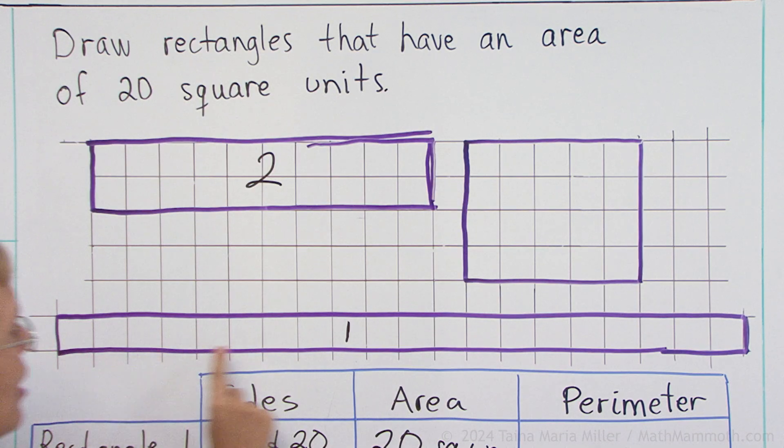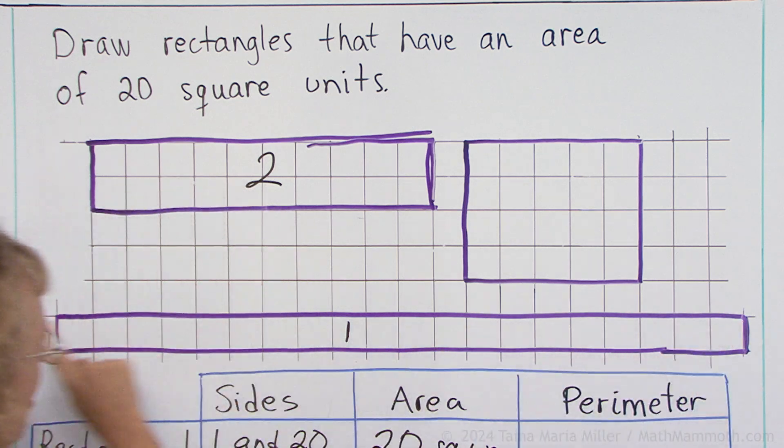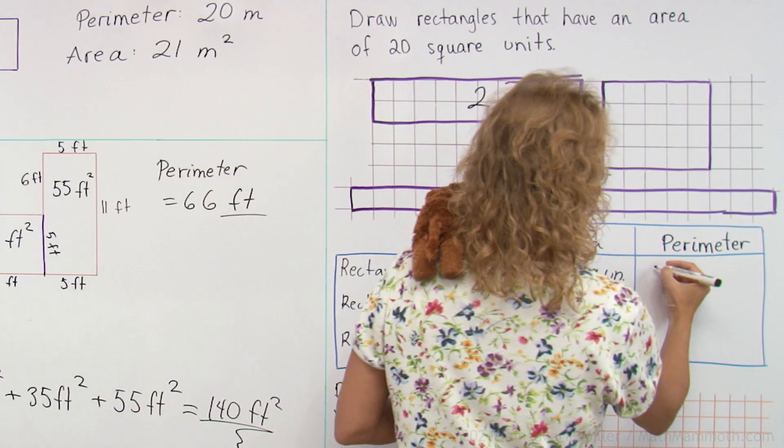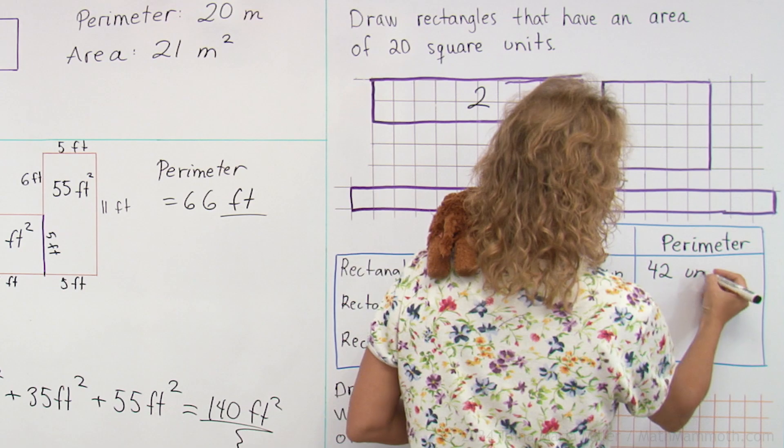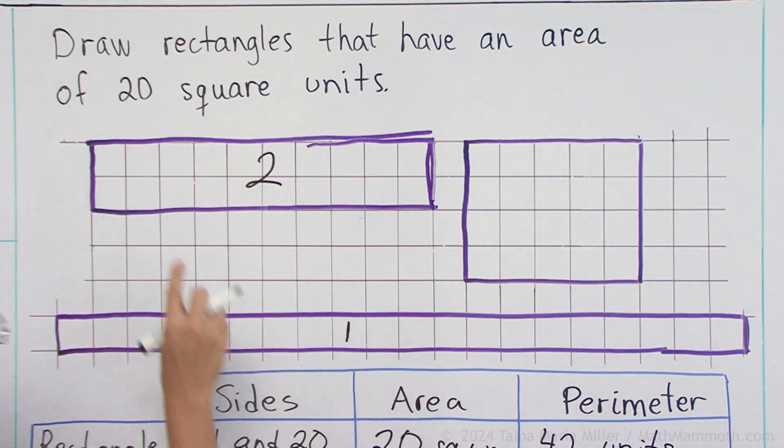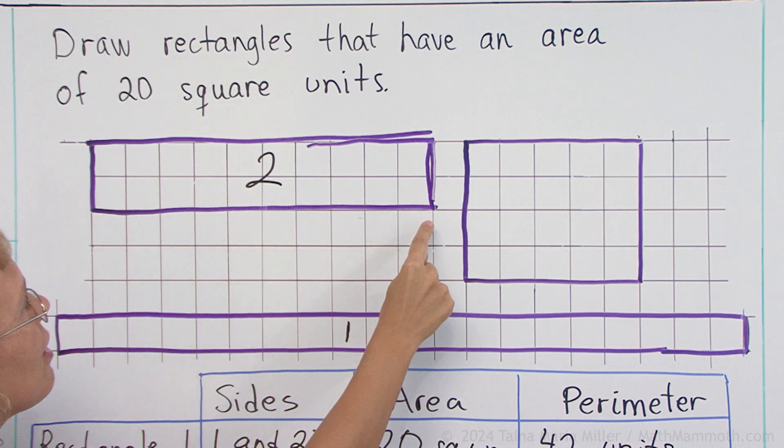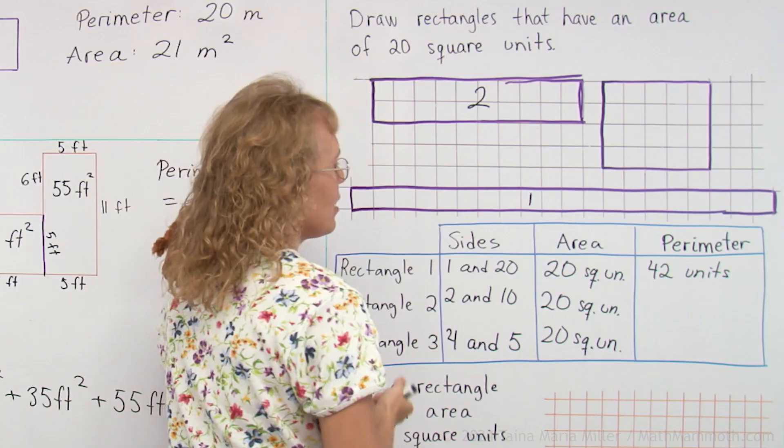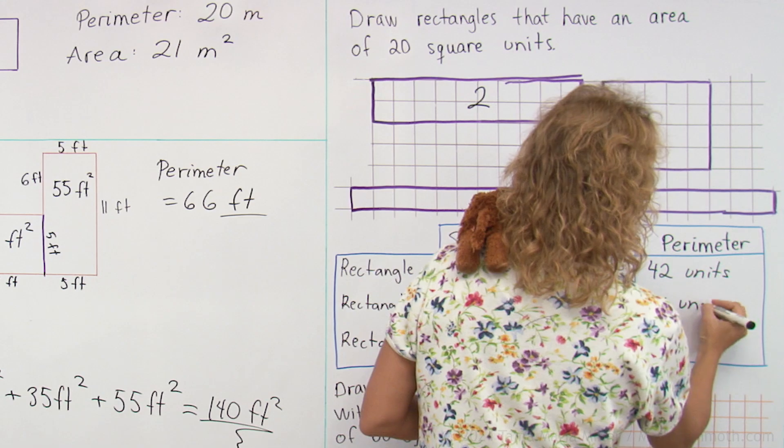This one will have 1 and 20, 1 and 20, or 21 and 21, so it's going to be 42 units. How about this one? We have 2 and 10, that's 12, and another 12, so 24. Much less.